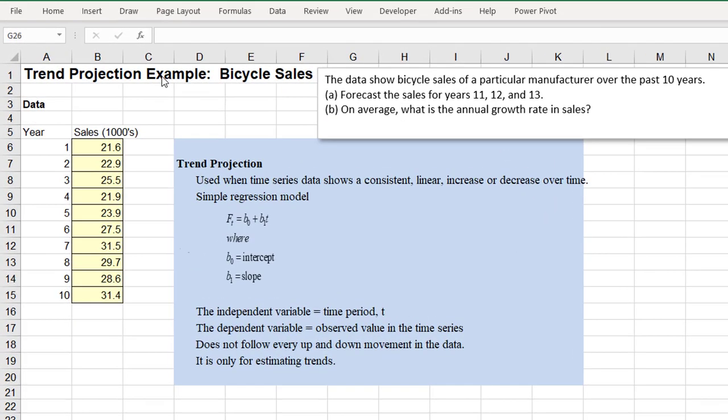In this example, we will learn how to make forecasts for time series data that have some kind of trend. Here we have bicycle sales data over 10 years, and we would like to predict the sales for the next couple of years, years 11, 12, and 13.